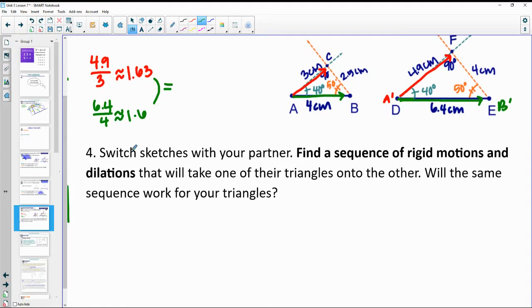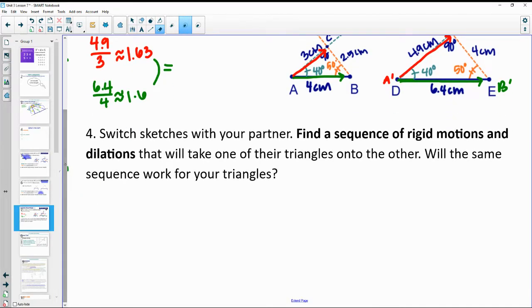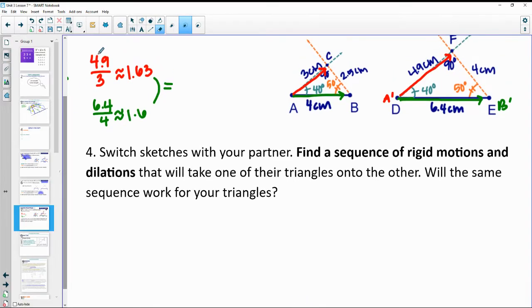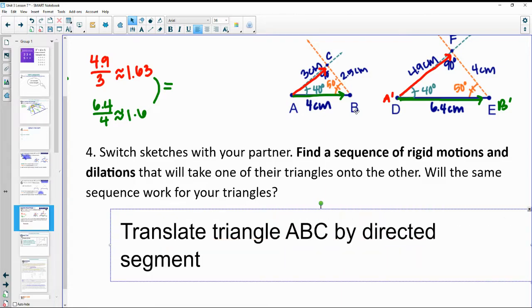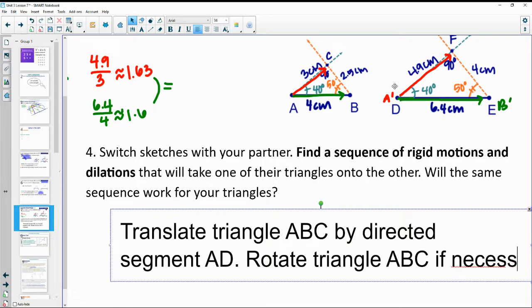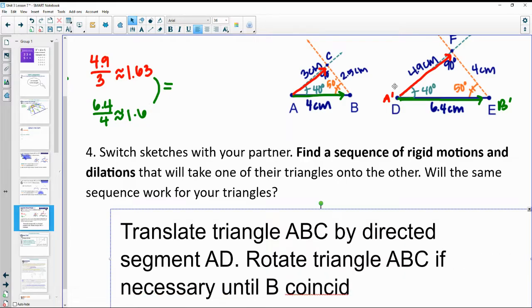So now if you're doing this video at home, then you can write out a set of transformations for your own triangle. So translate triangle ABC by directed segment AD. And then mine, my bottom lines were parallel here. So I didn't really have to rotate, but I'm going to put rotate triangle ABC if necessary until B coincides with E, just in case they weren't parallel if this one had been rotated a little bit.